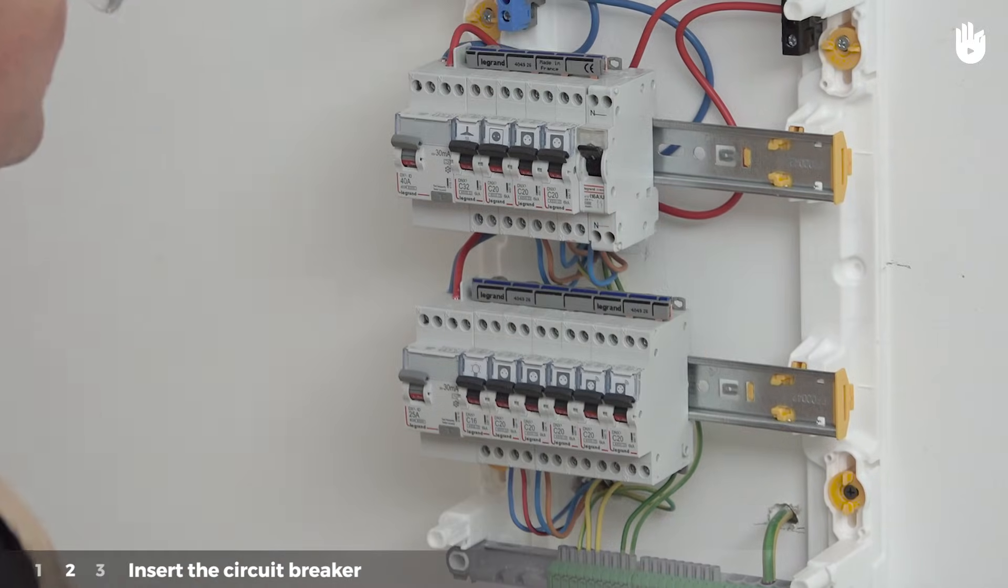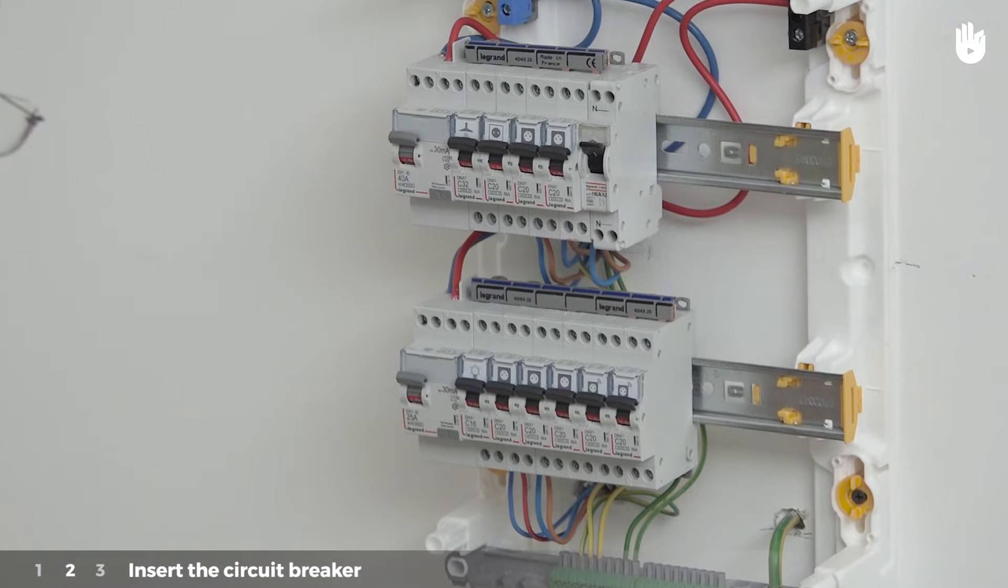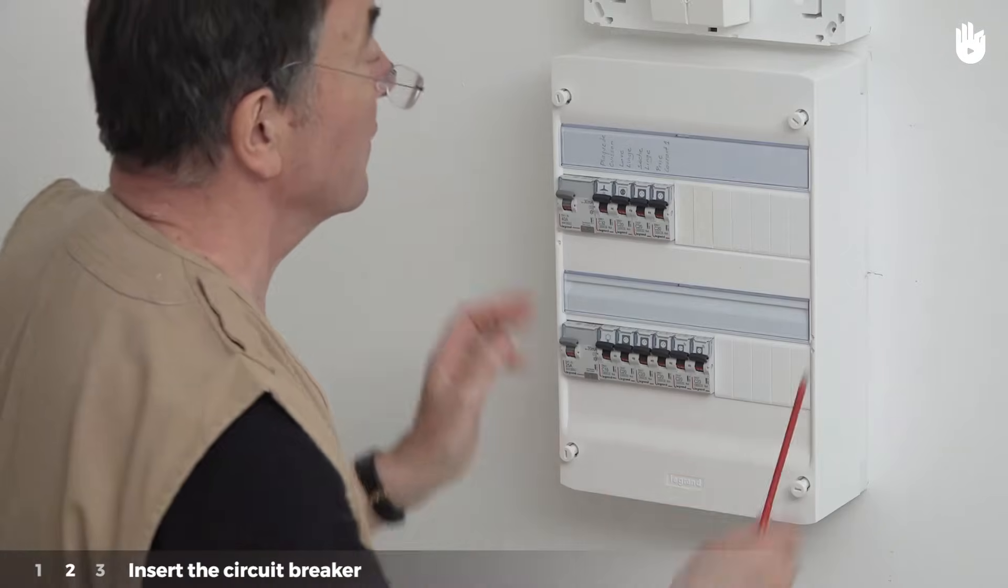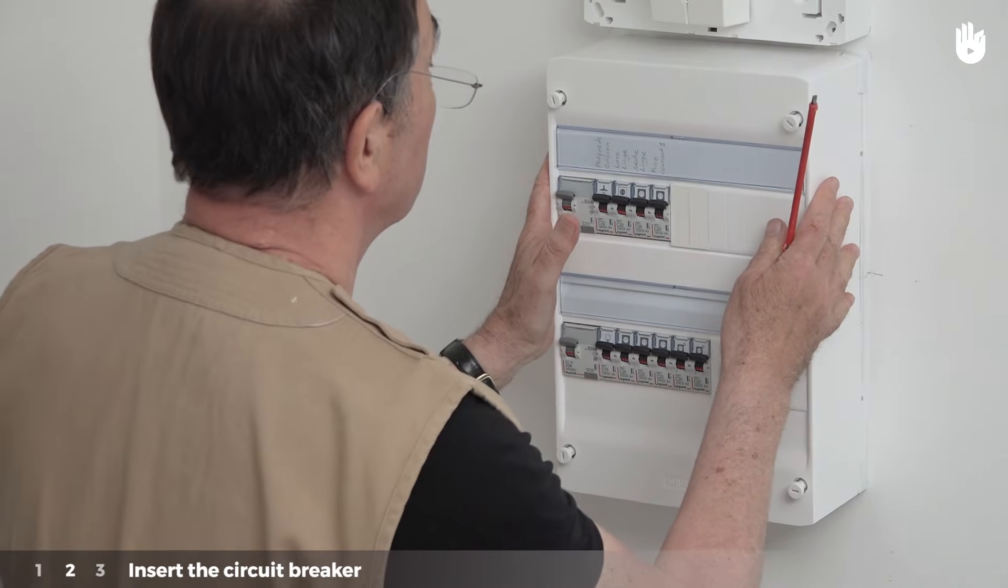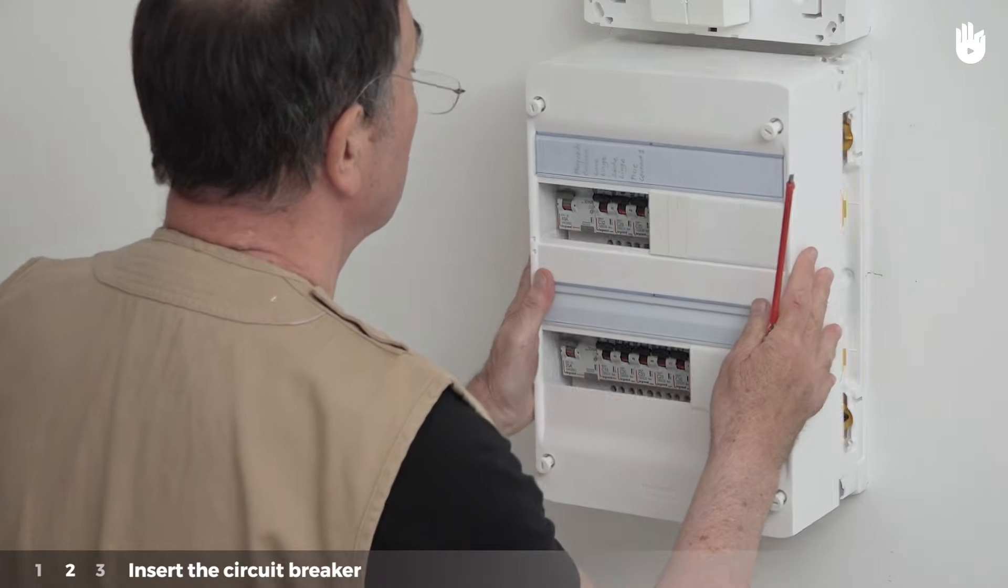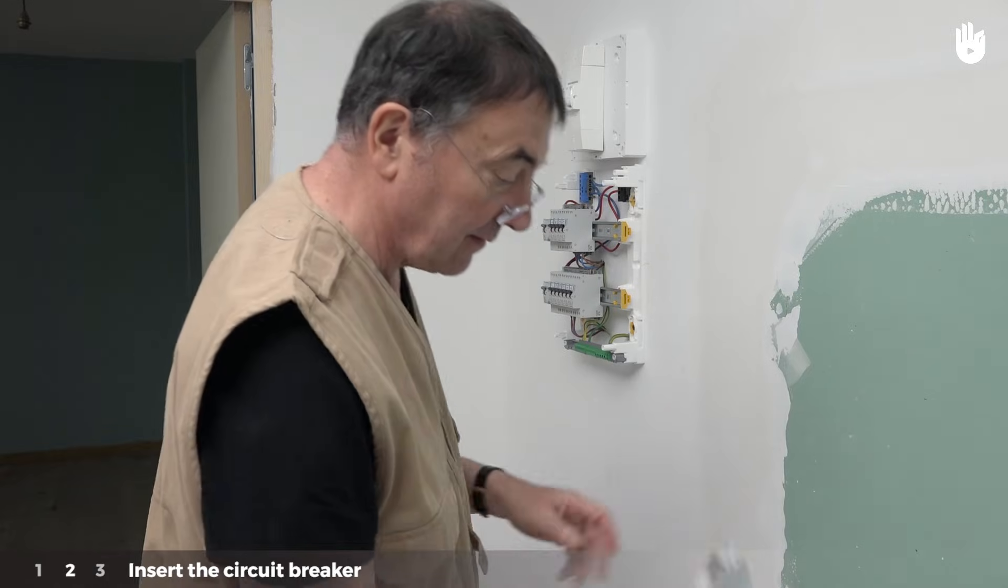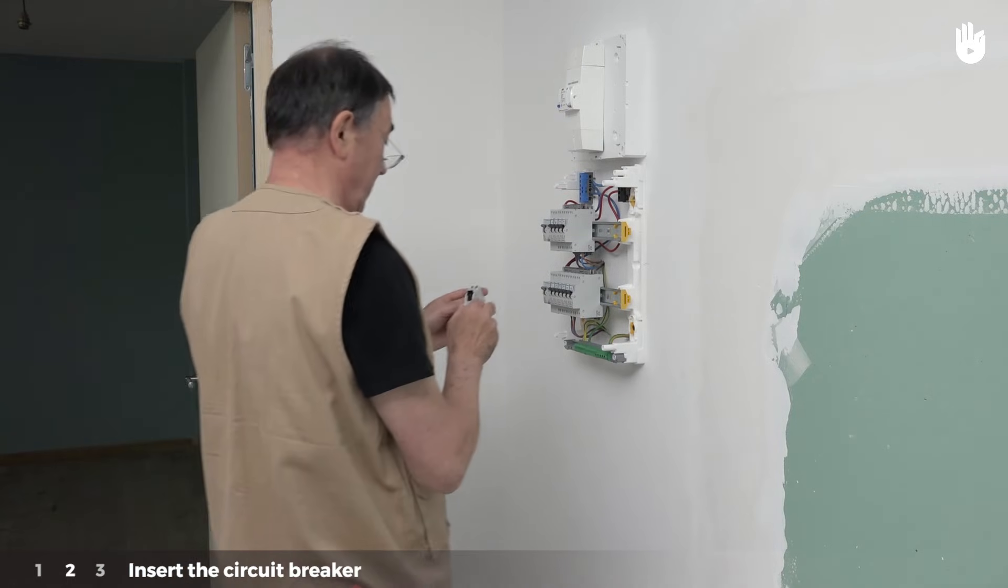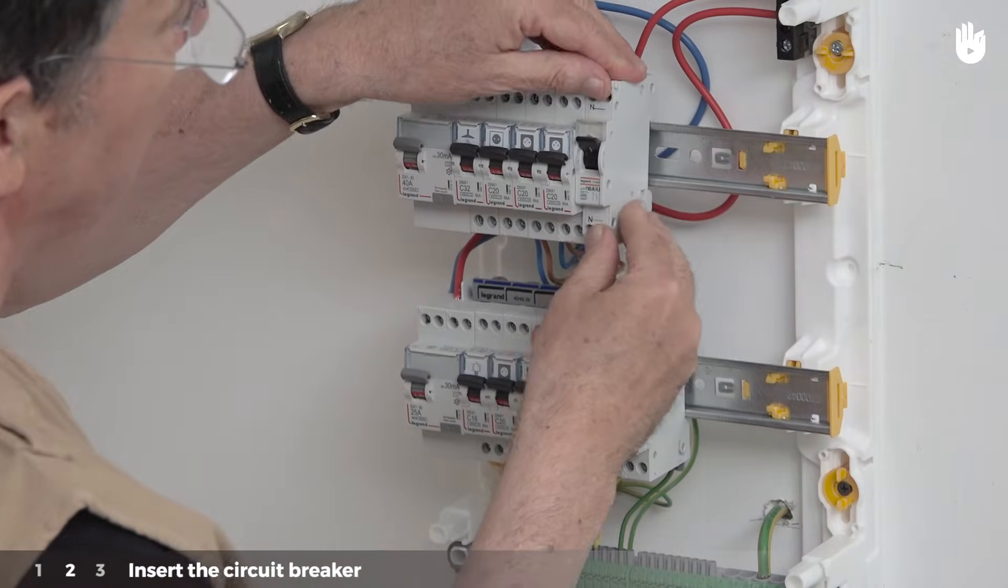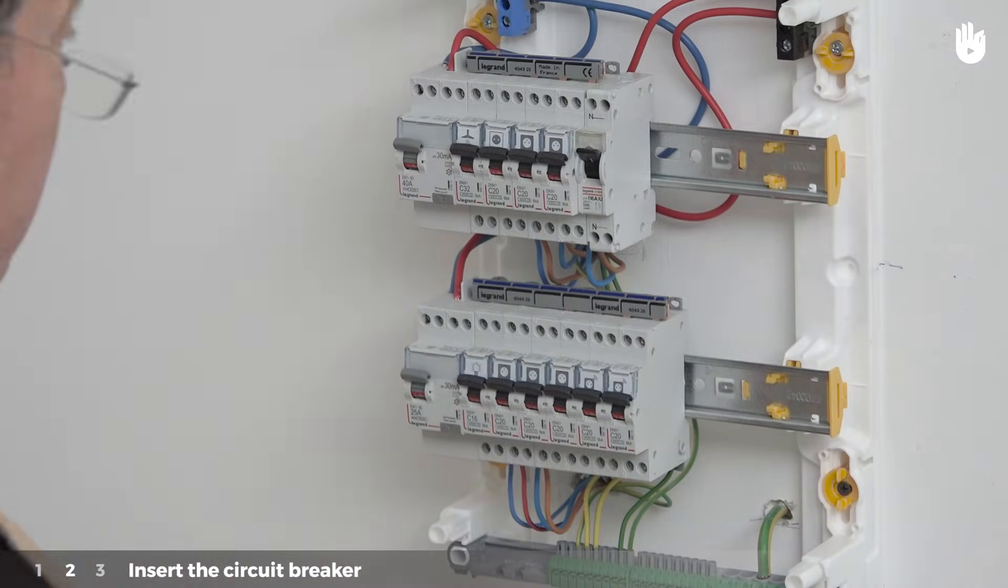Step two insert the circuit breaker. Unscrew the fasteners on the front of the panel and remove them. Put the circuit breaker into the available space next to an already installed circuit breaker. Clip it into the bar provided for this.